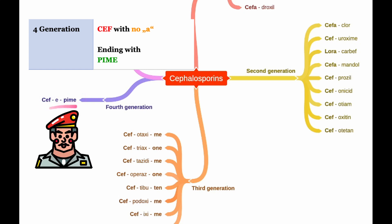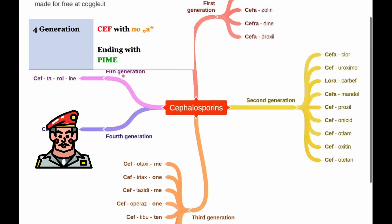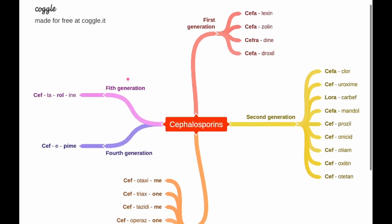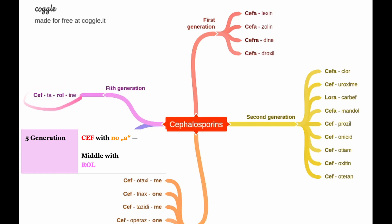For the fifth generation, the rule is you have 'cef' with no 'a' in the beginning and the middle you have '-rol'. The single important one to remember here is ceftaroline. Cef at the beginning, '-rol' in the middle, tarolin sounds like Tarantino, the famous movie director.